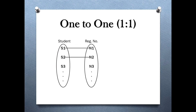The first type is one to one relationship. We can define it as: when every entity of the first entity set can relate to at most one entity of the second entity set, and vice versa, then we can say the relationship is a one to one relationship.